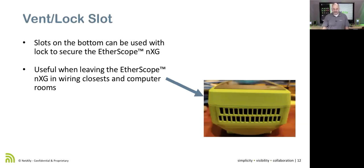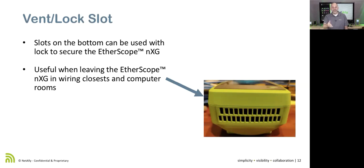Down on the bottom we've got our vent, but the holes on each side fit a Kensington lock. If you want to lock this down — say you've got it in the wiring closet and don't want someone walking away with it — you have two lock slots. So both you and your colleague can put locks on there, meaning you both have to agree before someone takes it.